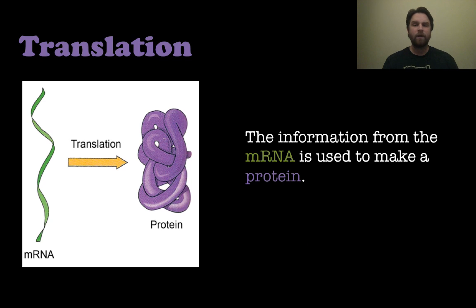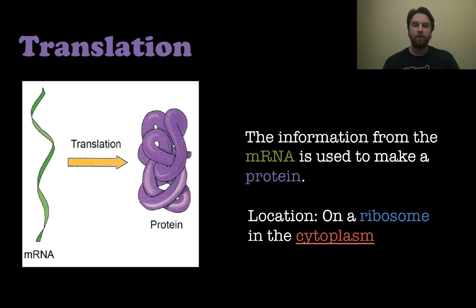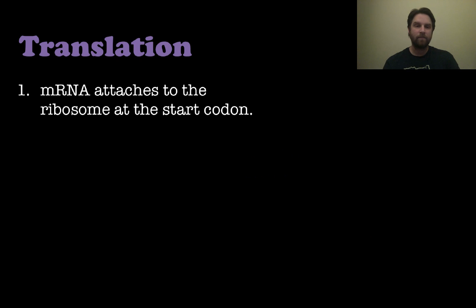Now let's move on to translation. Now that we have our messenger RNA, we need to translate it into protein — into something the body can understand. We take the information from the messenger RNA and use it to make a protein, and this happens in the ribosome, which is in the cytoplasm.